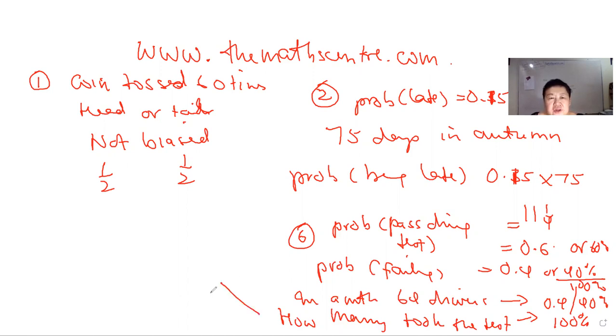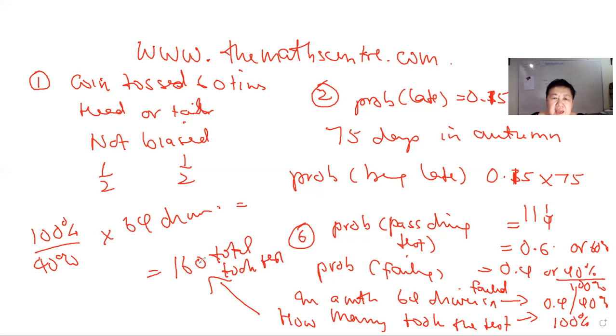Therefore, your working is very simple. It's just 100% over the percentage you fail, which is 40%, times the number of drivers, 64 drivers. That will give you an answer which is 160 in total. That means 160 took the test, and out of 160, 64 failed, therefore 96 passed—altogether 160.